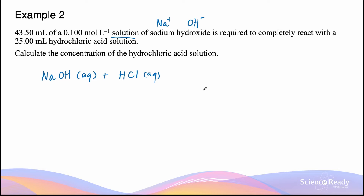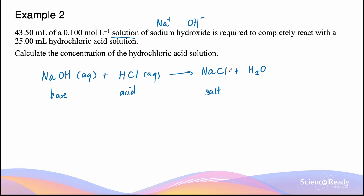This is an acid-plus-base reaction. The metal from the base, sodium, combines with chloride from the acid to form an ionic compound — sodium chloride, also known as table salt. The leftover hydrogen from the acid and the hydroxide ion from the base combine to form water, H₂O. Sodium chloride is in aqueous form as it dissolves well in water, and water is in liquid form at room temperature.